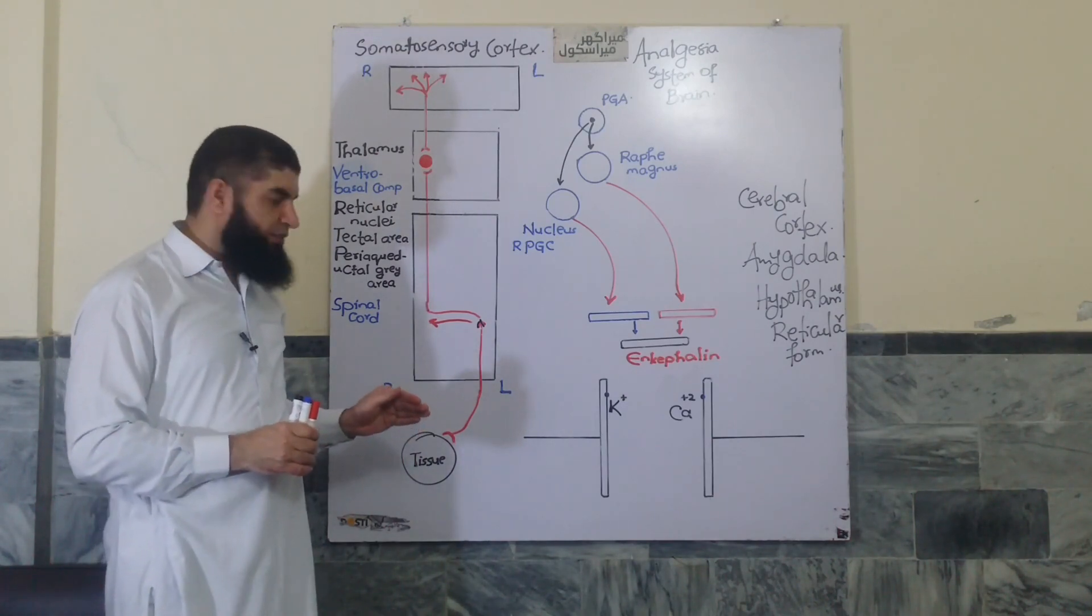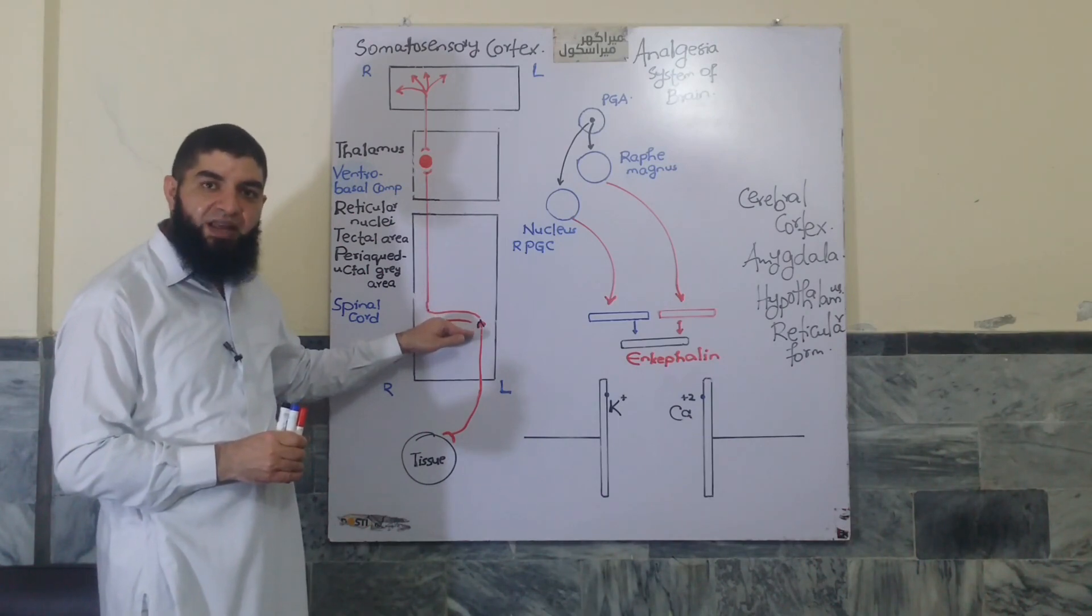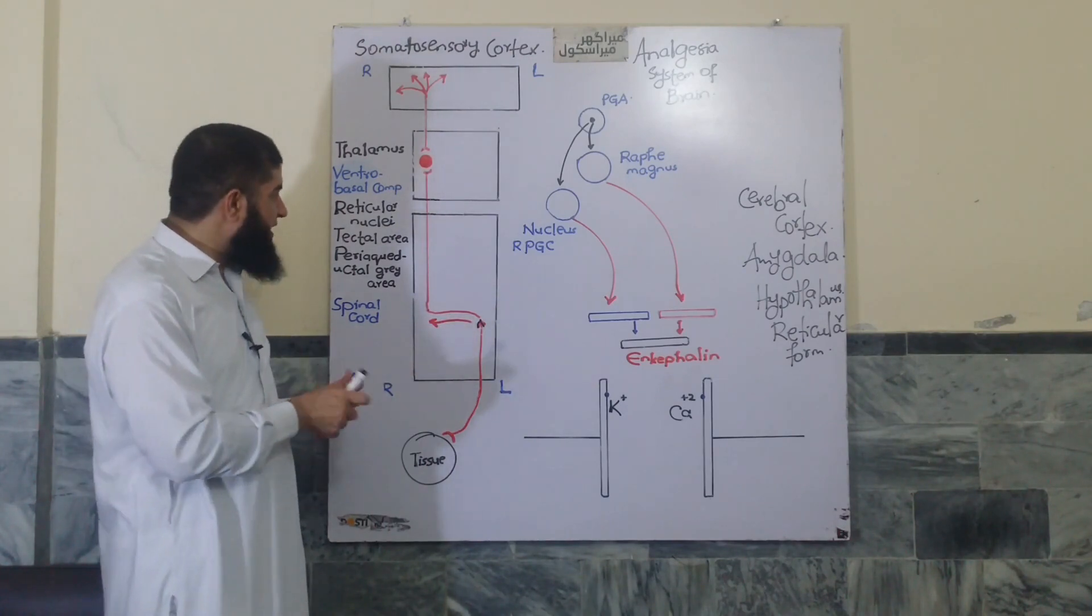The slow pain fibers, the second order neurons here in the case of slow pain fibers, the paleospinothalamic tract has a bit different course.